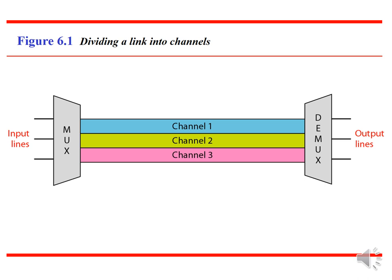In the given diagram, we can observe that the transmission path is divided into three parts: channel 1, channel 2, and channel 3. We consider FDM to be an analog multiplexing technique. However, this does not mean that FDM cannot be used to combine sources sending digital signals — a signal can be converted to analog and then FDM technique can be applied.